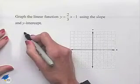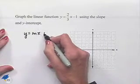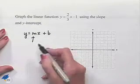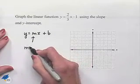Let's identify the format of the equation as y equals mx plus b. The m value is our slope, and in this case, the slope is equal to two-thirds.